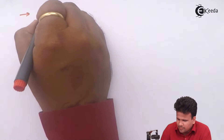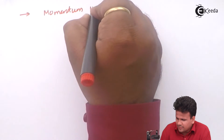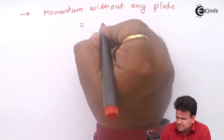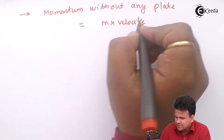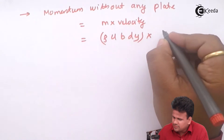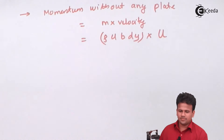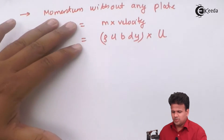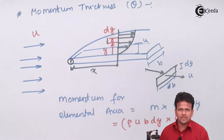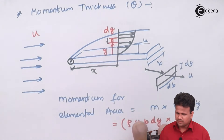Similarly, if there was no plate, then the momentum without any plate is given as mass into velocity: rho·u·b·dy. If there was no plate, then this would have a velocity equal to the free stream velocity U-infinity. So we have a momentum without the plate and a momentum with the plate. The loss in momentum will be the greater momentum minus the smaller momentum. Since U-infinity is greater, we consider that difference.